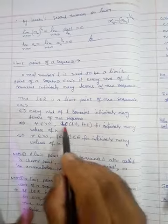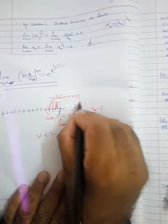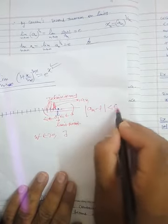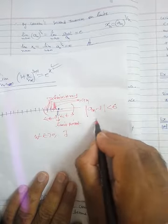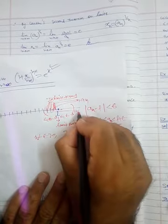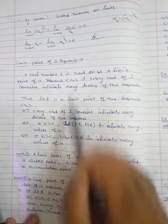This can be written as: for every epsilon greater than 0, |a_n - l| < epsilon for infinitely many values of n. Opening the absolute value gives l - epsilon < a_n < l + epsilon, meaning a_n lies within this interval for infinitely many values of n.